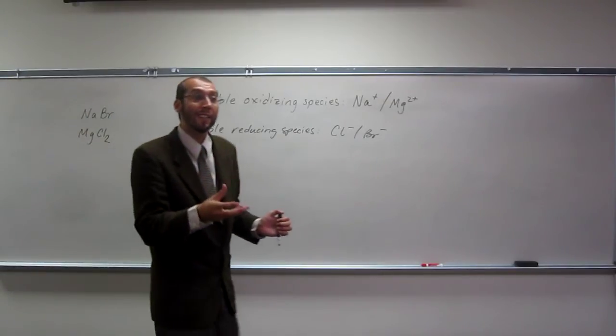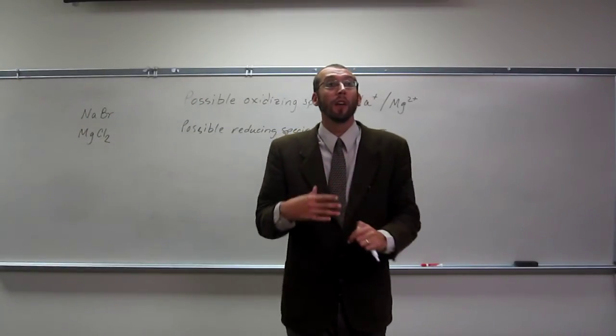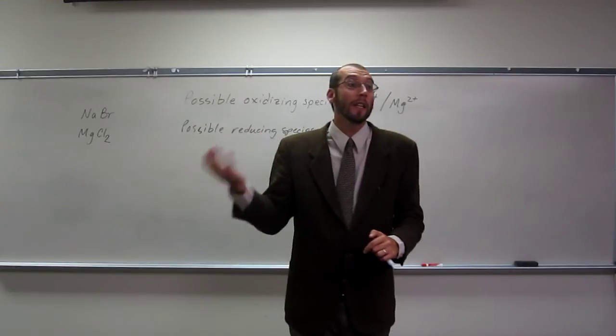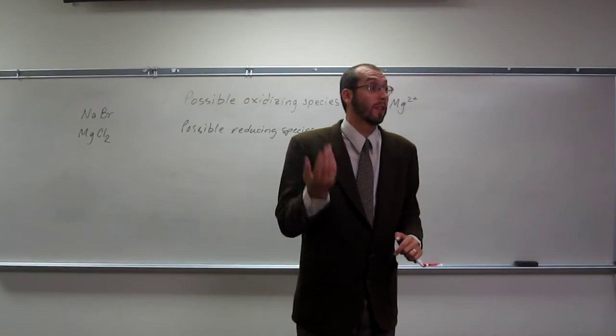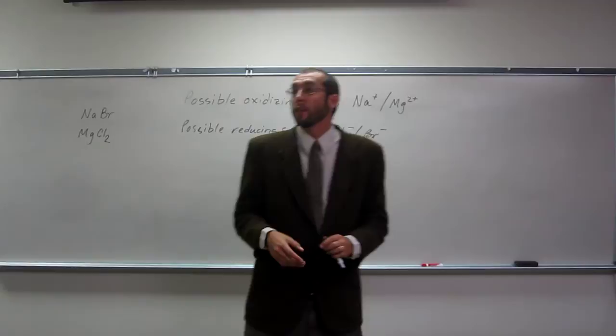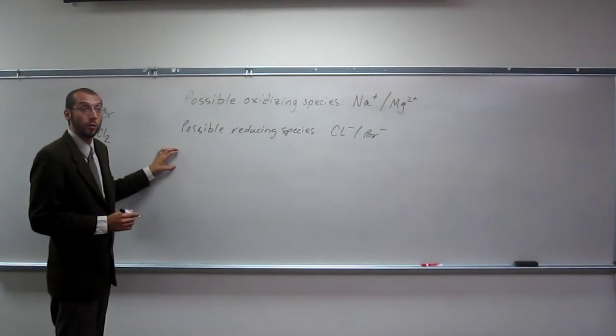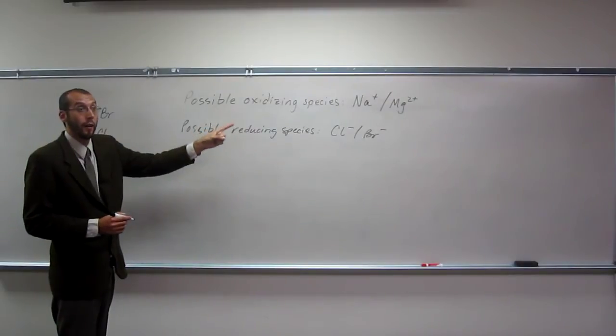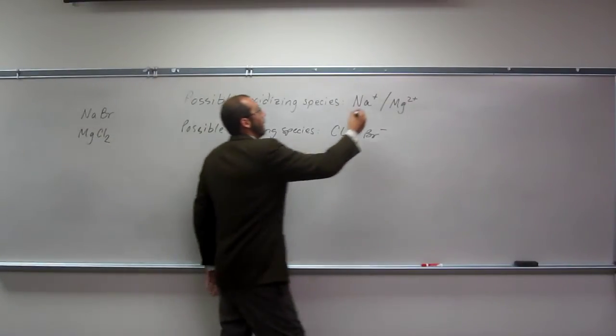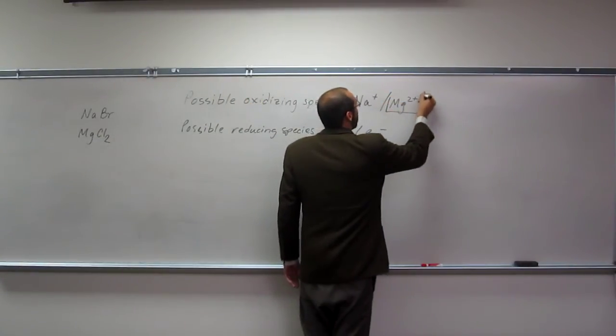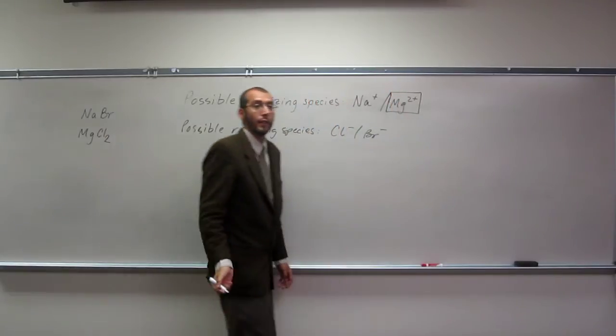Since that's the case, it should follow that magnesium would be easier to donate an electron to than sodium. Therefore, the thing that gets reduced is the magnesium ion. We're going to write a half-reaction with that magnesium ion.